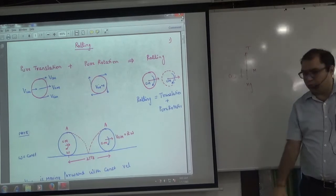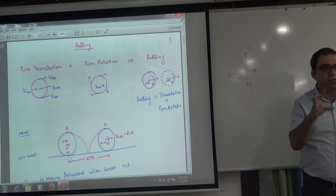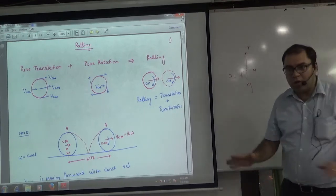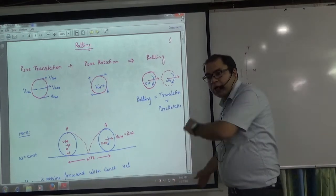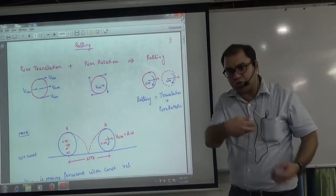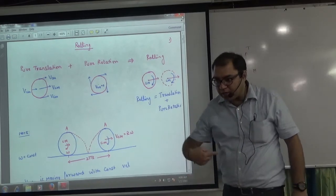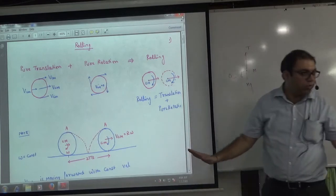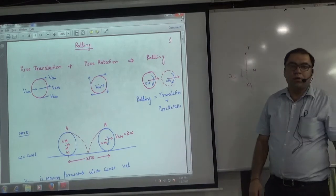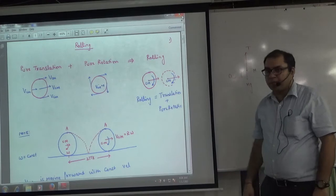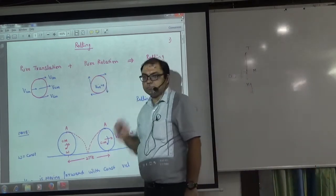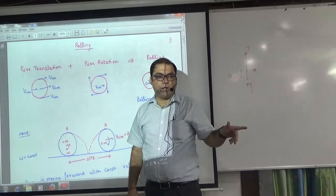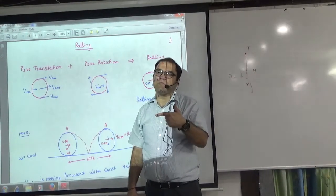Suppose you have a tire — a car tire. Keep the tire on the floor and leave it with a tangential force. Now what is the tire doing? It goes on the wheel. Imagine you have a tire and you put an axis through its center and fix it in place.